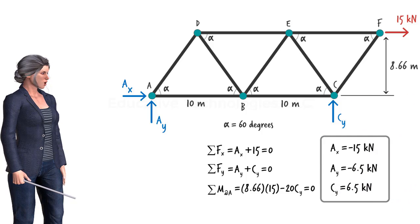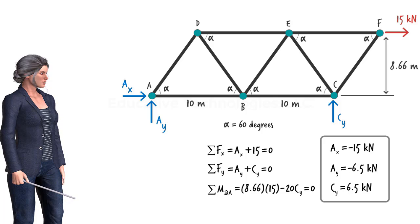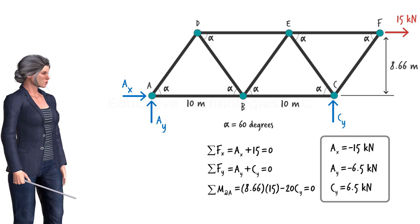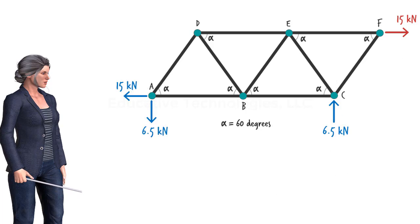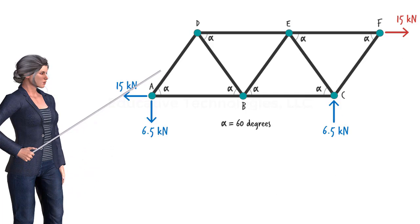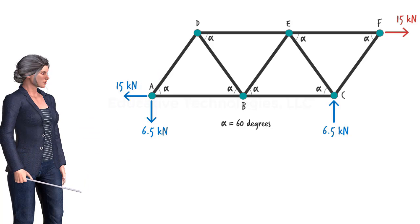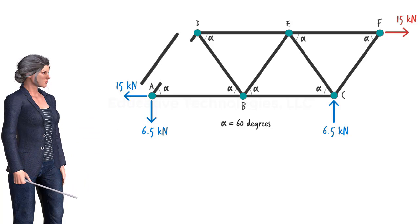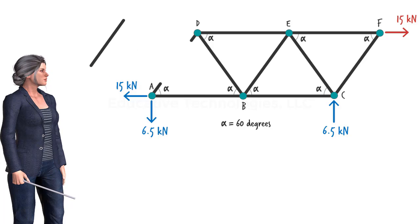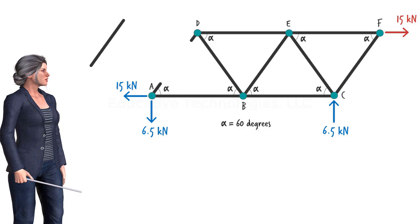As I mentioned before, the method of joints involves isolating each joint of the truss before applying the equilibrium equations to the joint. How do we isolate the truss joints? Consider member AD. Imagine cutting and separating the member from the structure like this. We know that the member carries an axial force. Let's assume it is a tensile force, which we can show this way.